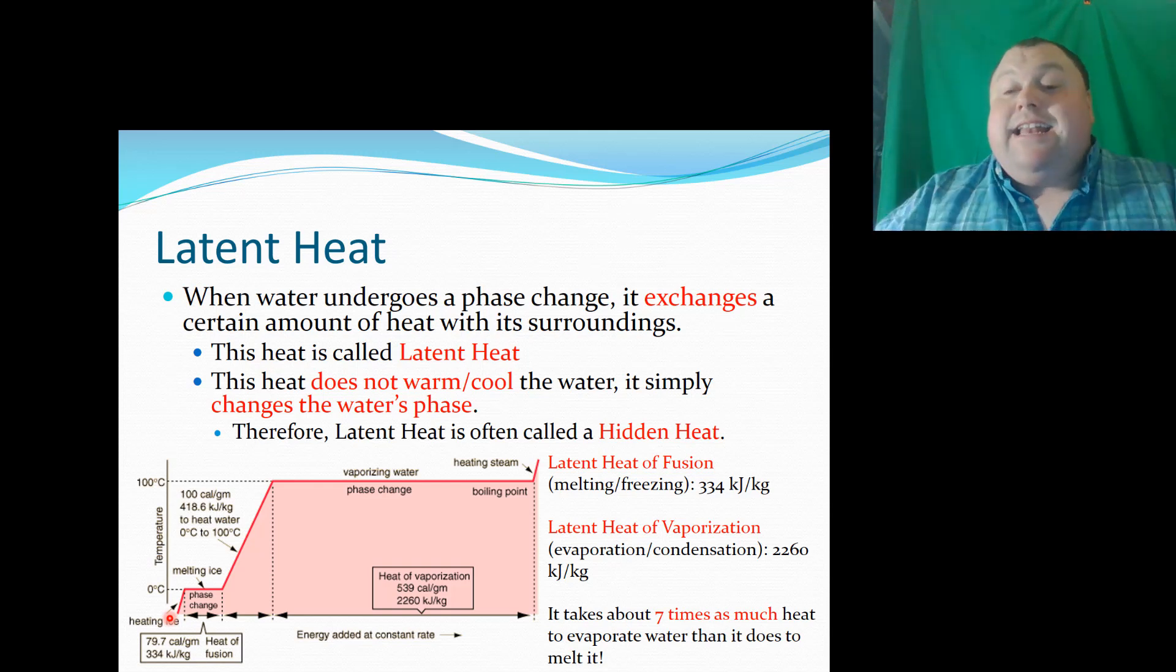Because all of that heat is going into breaking down the individual bonds that these individual molecules have with one another, causing them to spread out. And that's when the phase change happens. So we oftentimes call this a hidden heat. Because applying heat in this situation doesn't actually change the temperature. Instead, it changes the phase.